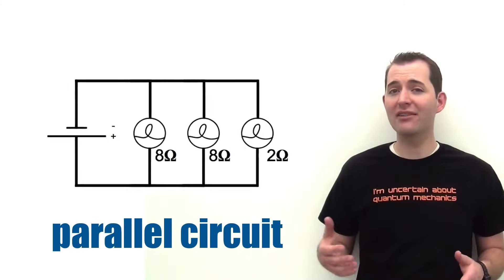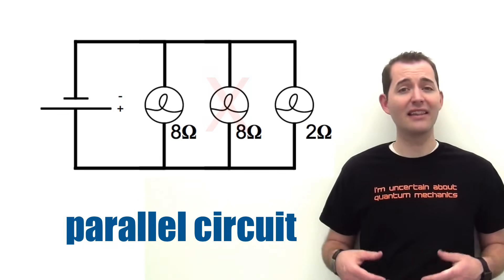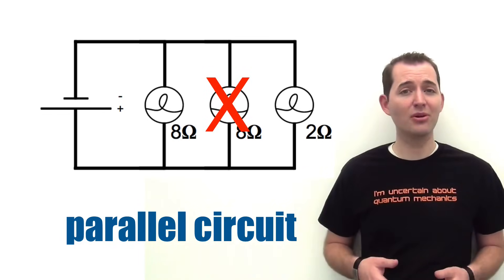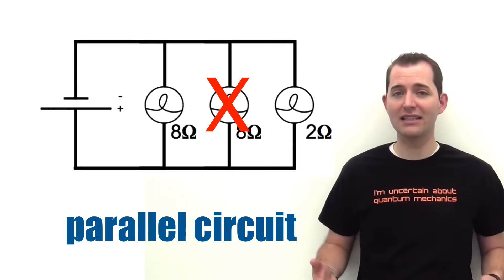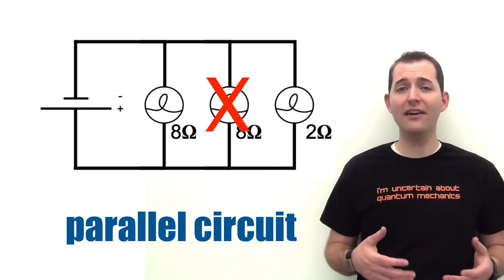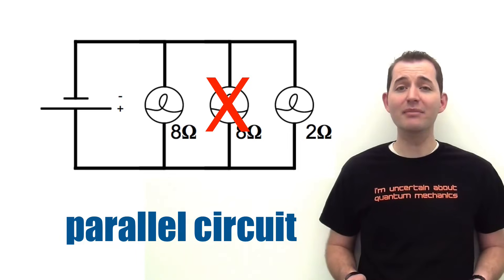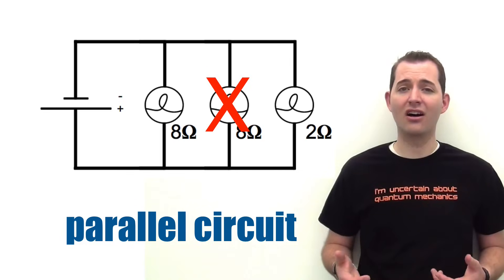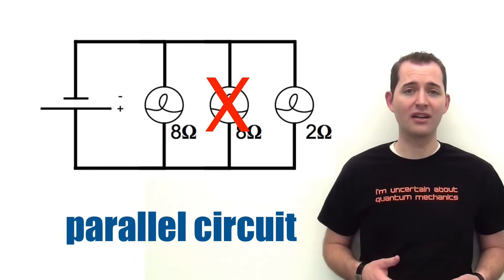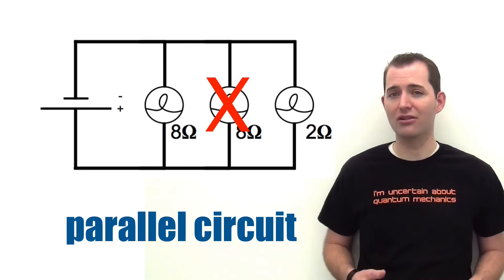A final and very important feature of our parallel circuit is that if we remove any of our single bulbs, all of the other bulbs will continue to stay lit. Applying this to the same kitchen analogy, it means that we can run any one of those appliances by itself, whether or not the others are on or off. Clearly, parallel circuits are what we have in our home.